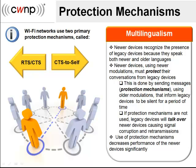Protection mechanisms work in two basic ways. For client stations, the primary method is called Request-to-Send / Clear-to-Send, or RTS-CTS. The client sends an RTS frame in a common language to the access point, and the access point sends a CTS back to the client in a common language. All stations in the area hear these protection frames, understand them, and wait for the conversation to finish. While the other stations are waiting, the client sends its higher-speed data without interruption. RTS-CTS is used by client stations because all stations in the basic service set can hear the access point, so the AP's CTS notifies all surrounding stations.